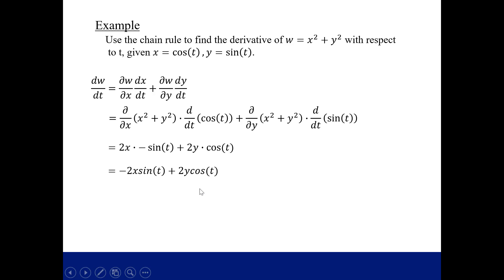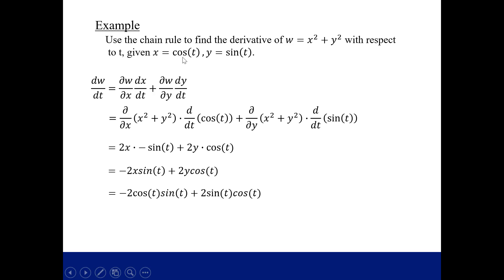For the y terms, the partial derivative of w with respect to y — treating x as a constant — gives 2y, and the derivative of sine t is cosine t. After simplifying, we substitute what x and y equal into this derivative. Notice it still has x, y, and t in its expression, so we substitute x equals cosine t and y equals sine t. We end up with minus and plus the same quantity, so the result is 0.